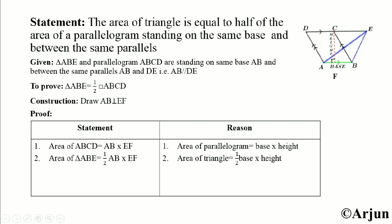Similarly, statement two: area of triangle ABE equals one-half base into height. We know area of a triangle equals one-half base into height. Here the base is AB and height is CF.